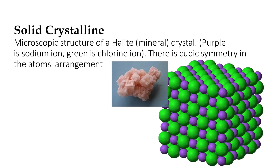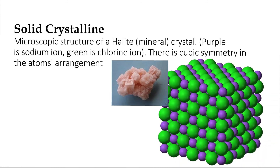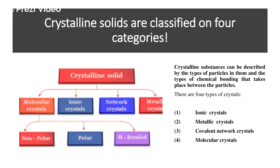The diagram shown here is of the halite mineral crystal, which is a highly organized crystalline structure. This is an example whereby you can visualize the high order of molecular arrangements in the crystalline form through two colors — purple and green — showing a cubic symmetry in the atom arrangement. Overall, crystalline solids are classified into four categories: ionic crystals, metallic crystals, covalent network crystals, and molecular crystals.